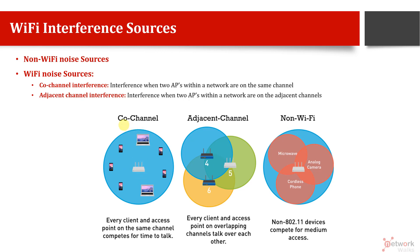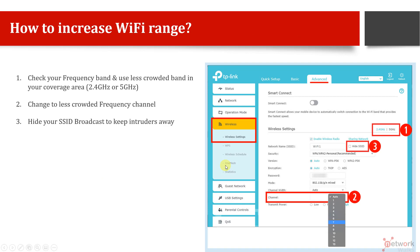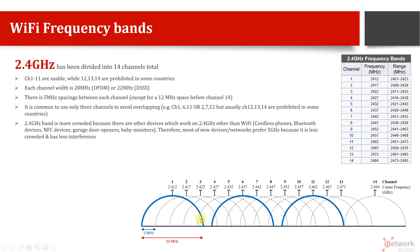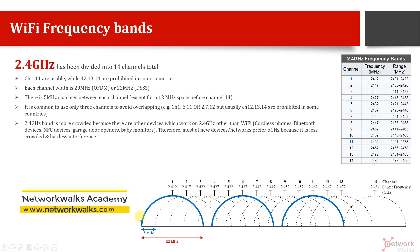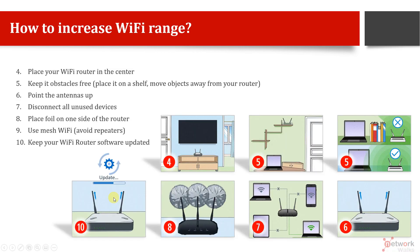The other type is called adjacent channel interference. In 2.4 GHz there are channels which overlap each other. For example, if I am running on channel number one and my neighbor is running on channel number two, most of the portion of those two channels overlaps, so we need to find a free channel that is not colliding.